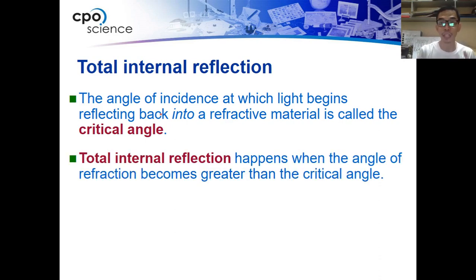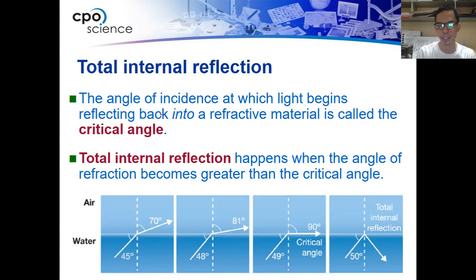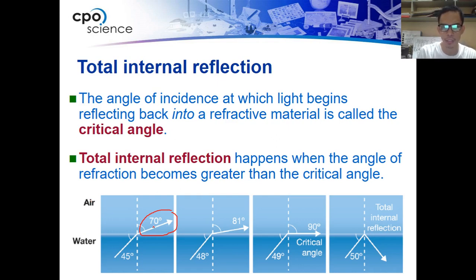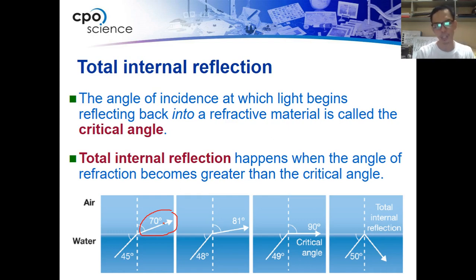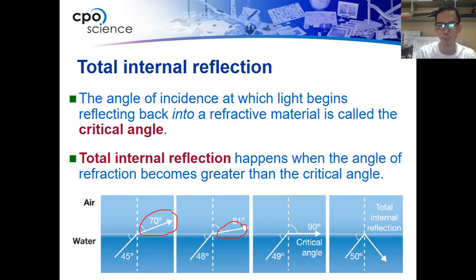The angle at which light goes back into the refractive material and doesn't go out is called the critical angle. Total internal reflection happens when the angle of refraction is greater than the critical angle. Here's how it goes: the refracted ray between air and water — if it is less than 90 degrees, the light will pass through or be refracted from that situation. On the second diagram, still less than 90 degrees, so the light is refracted. Any object present in that area will look like it is bent.